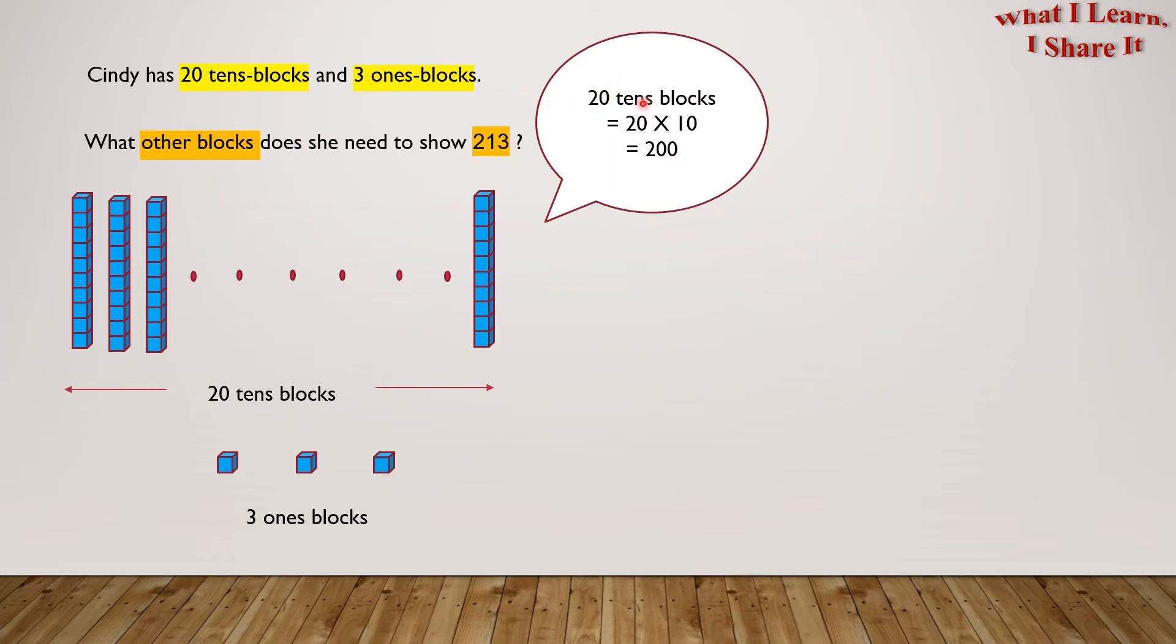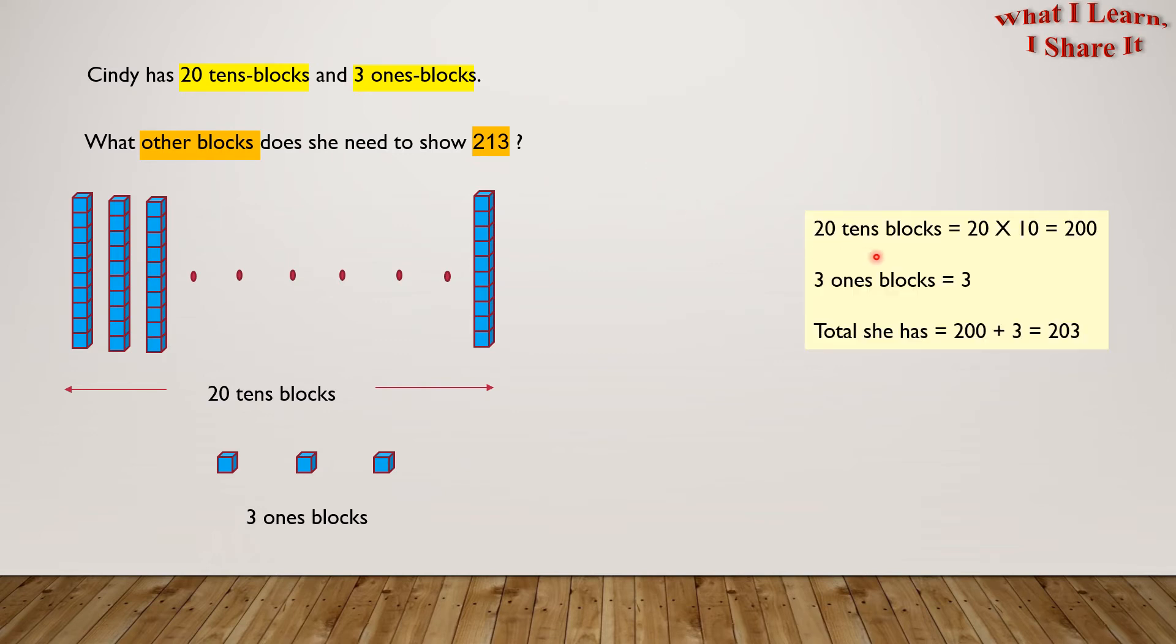We know that 20 tens-blocks equals 20 times 10 equals 200. So, 20 tens-blocks equals 20 times 10 equals 200. 3 ones-blocks equals 3. The total she has equals 200 plus 3 equals 203.